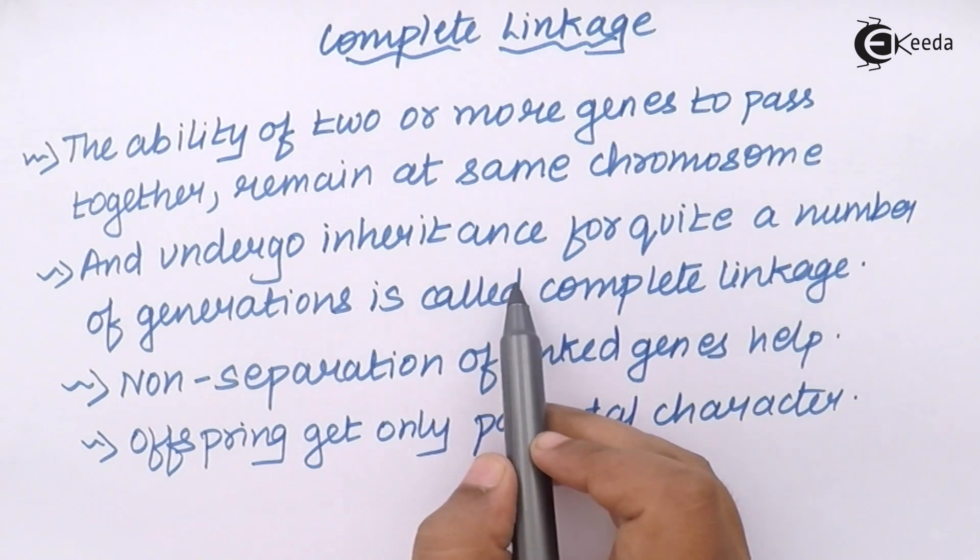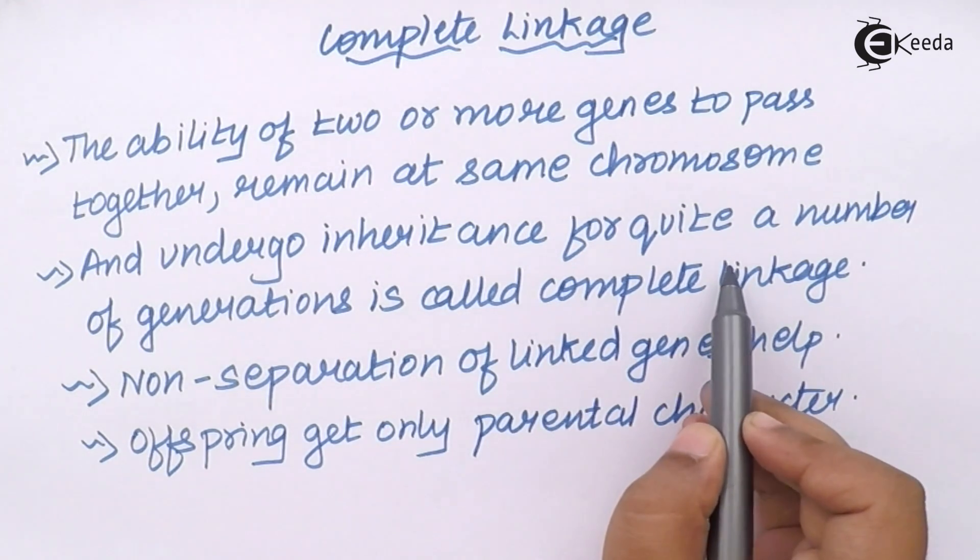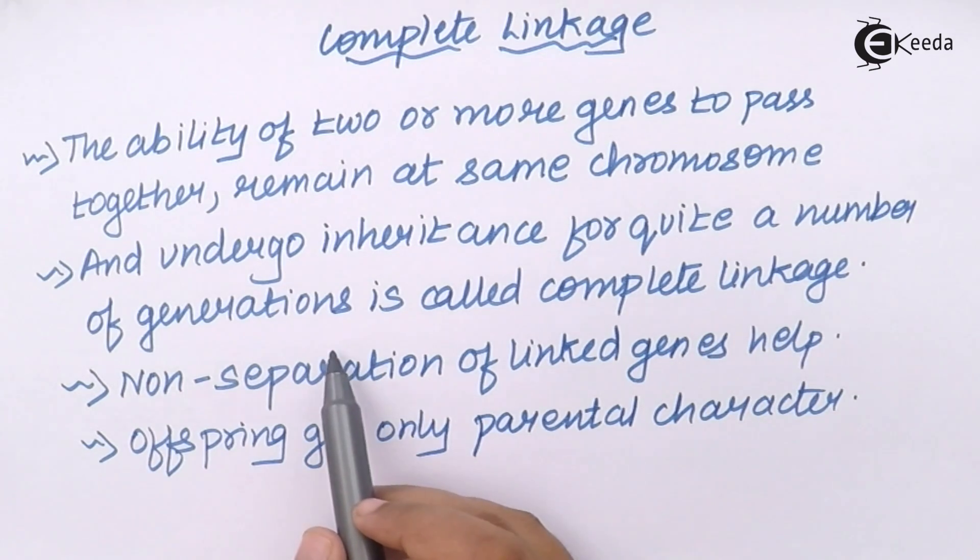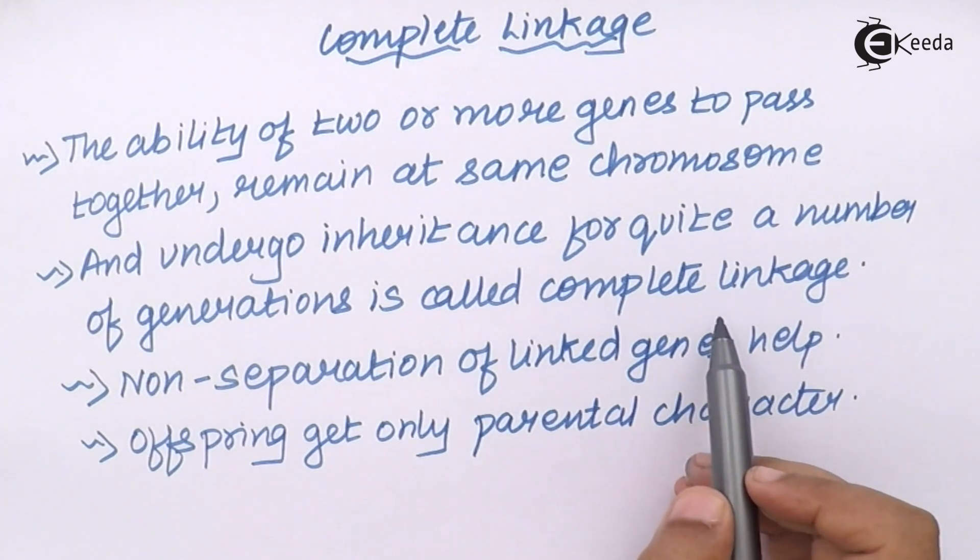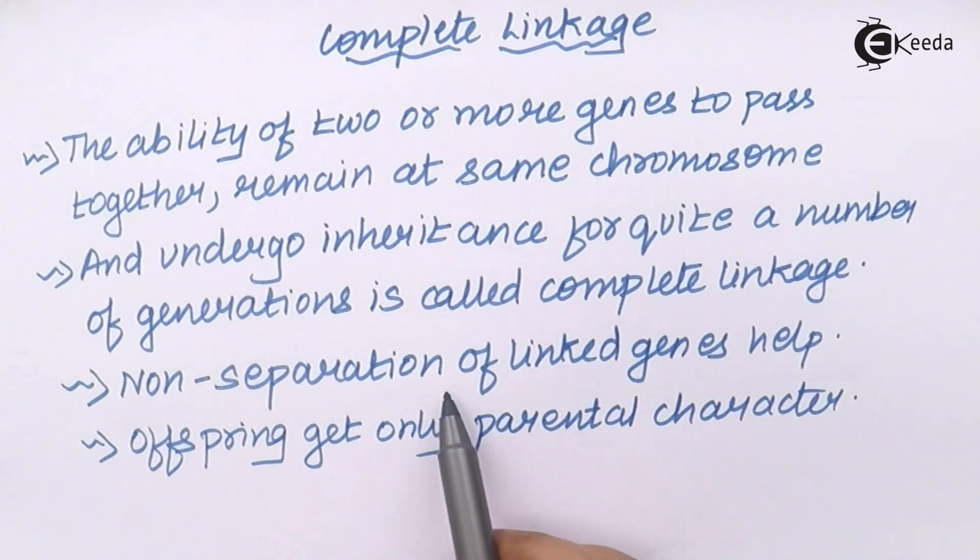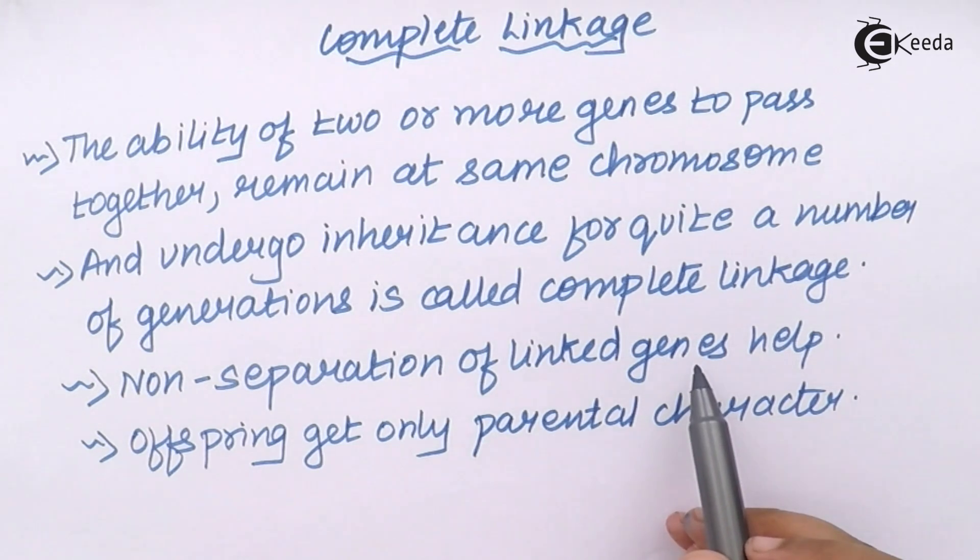Now during this inheritance which happens quite number of times in a generation is termed as complete linkage and the reason why complete linkage takes place is the non-separation of linked genes. Now linked genes want to stay together at a particular place and they want to be inherited together or passed out together at a time.